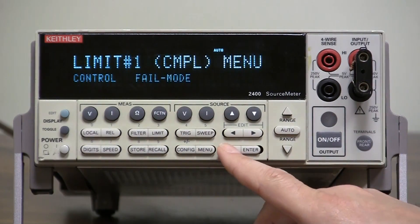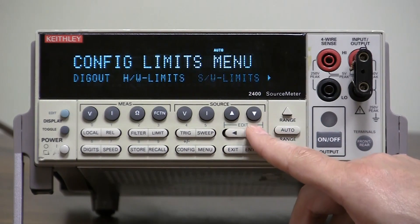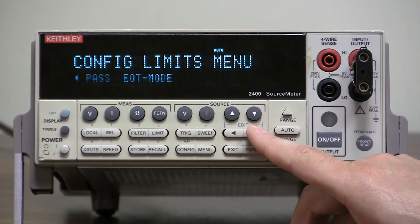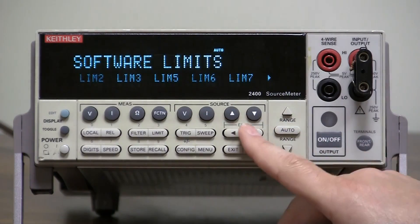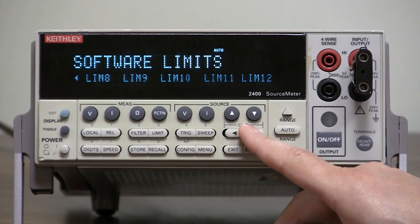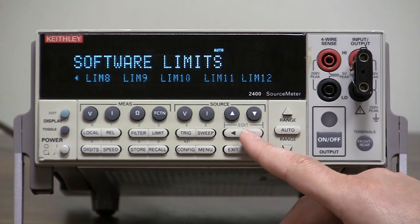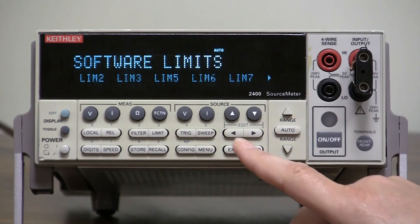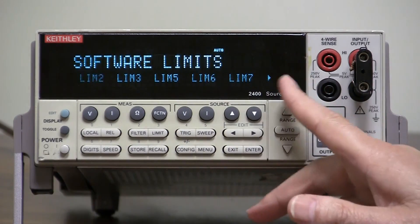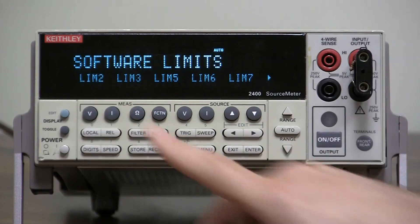But the one that's mostly used are the software limits. Software limits, you have quite a few of them. If you go into it, limit 2 through 10, I believe. Sorry, 12. Okay, so let's choose just 2. So you could have all those 10 separate, 10 total from 2 to 12. So let's go to limit 2.